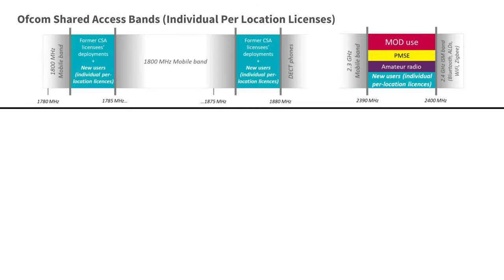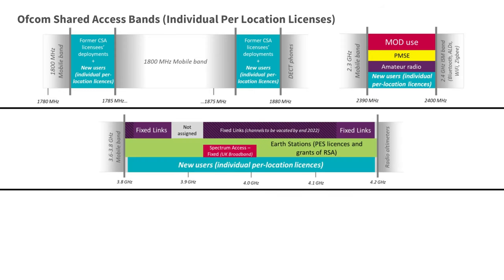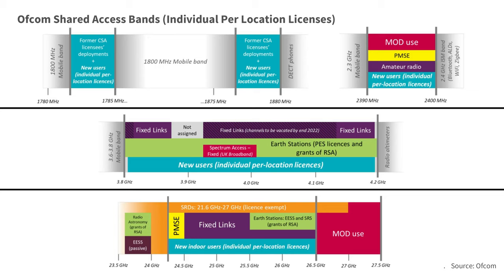The UK regulator, Ofcom, has taken a number of pioneering steps to make more spectrum available for non-operator driven mobile network deployments. First, Ofcom has identified four specific sub-bands, all under the footprint of 5G, and licenses access to those sub-bands on a per base station or small area basis. Second, Ofcom has set in place a process to locally license mobile network operator owned spectrum that is not used by the operator at that location, such as in sparsely populated rural areas.